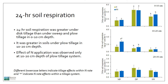Here come the results. Twenty-four-hour soil respiration was significantly higher under sweep and disc tillage than under plow tillage in 0 to 10 cm soil depth. The response of plow tillage on 24-hour soil respiration was higher than disc and sweep tillage in 10 to 20 cm soil depth. We did not see any difference in soil respiration in 20 to 30 cm soil depth. In addition, we also observed a response to nitrogen application specifically in plow tillage system in 10 to 20 cm soil depth.